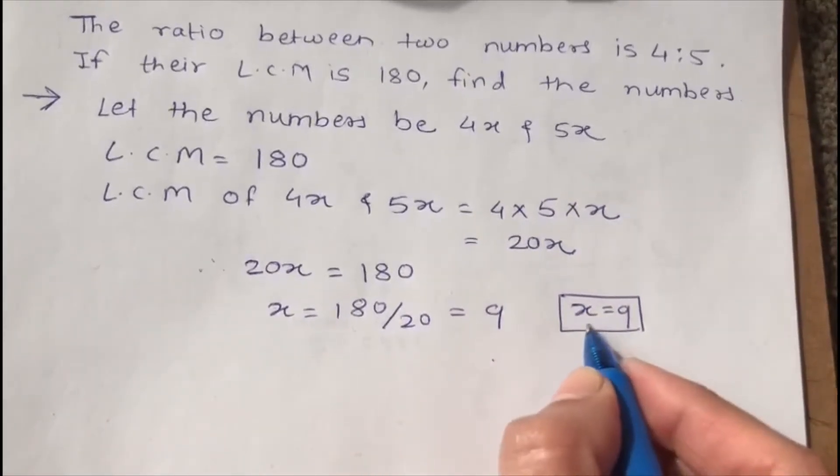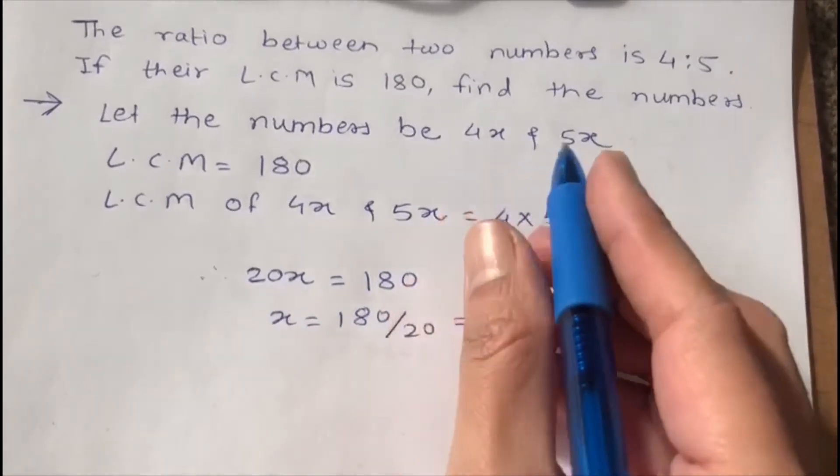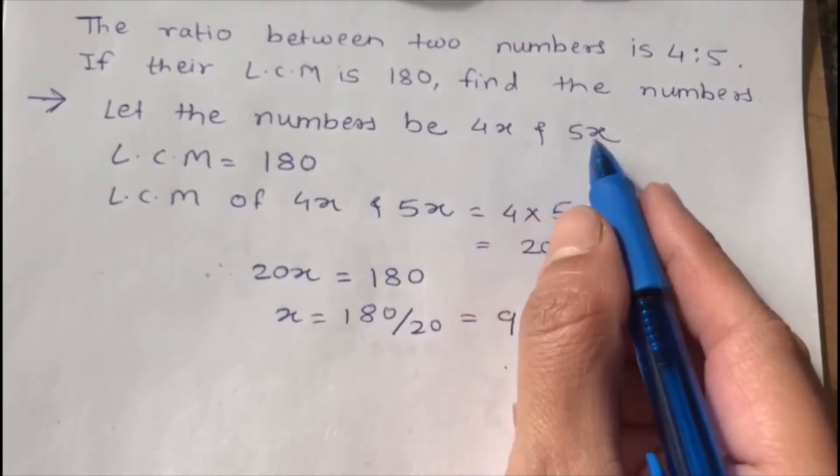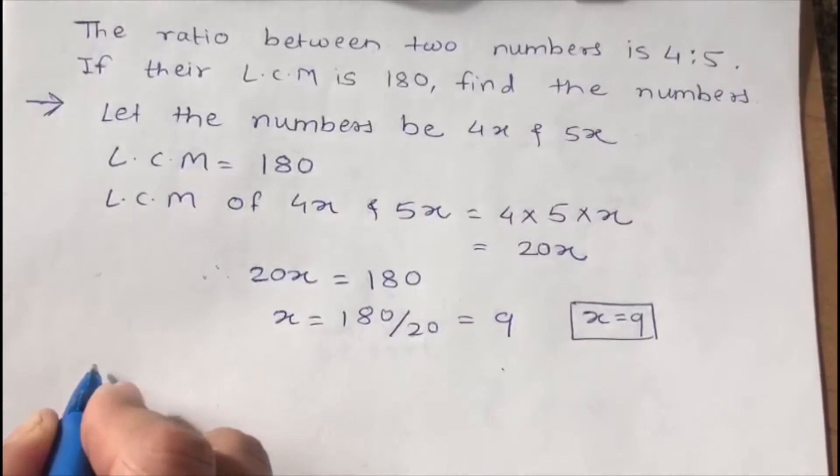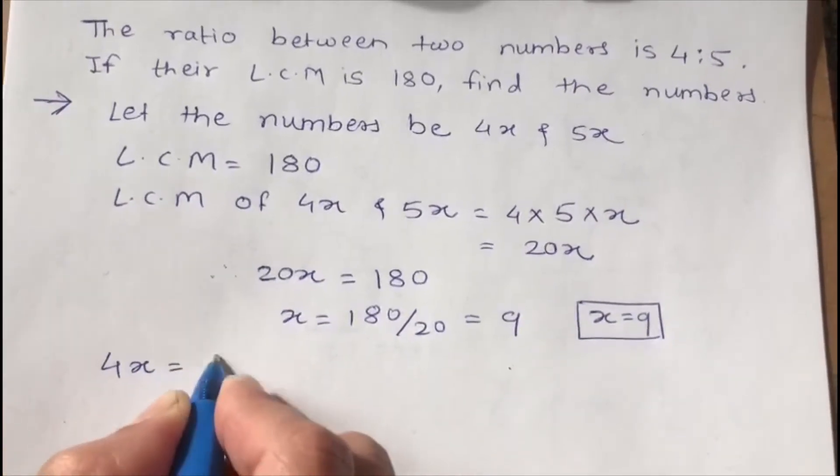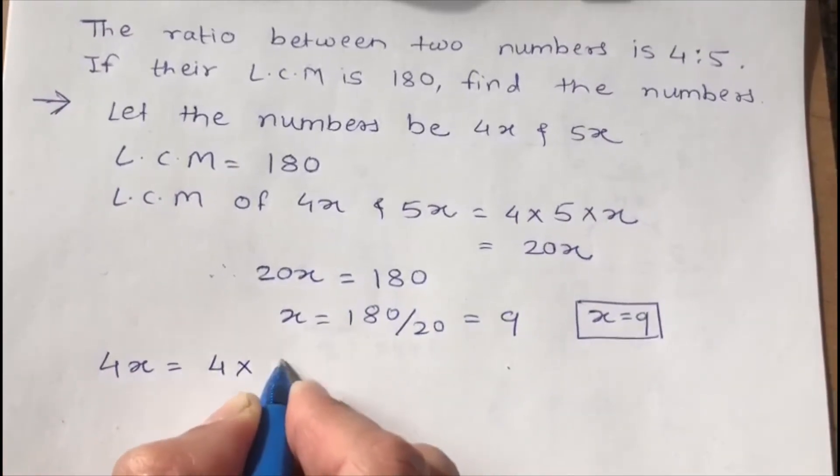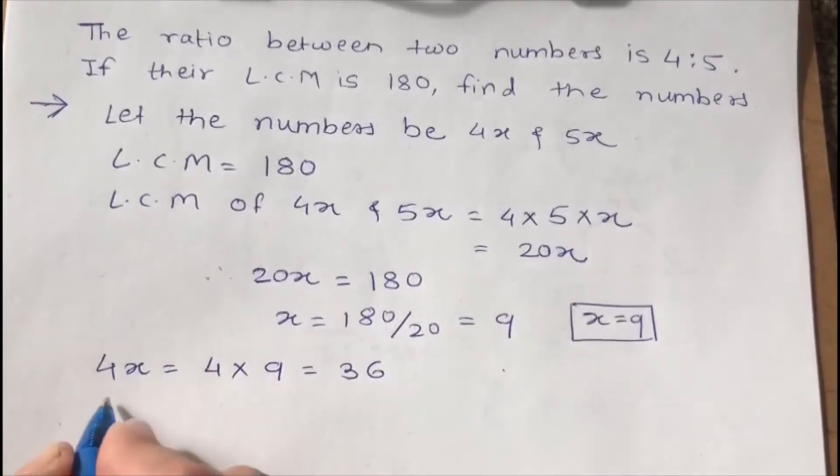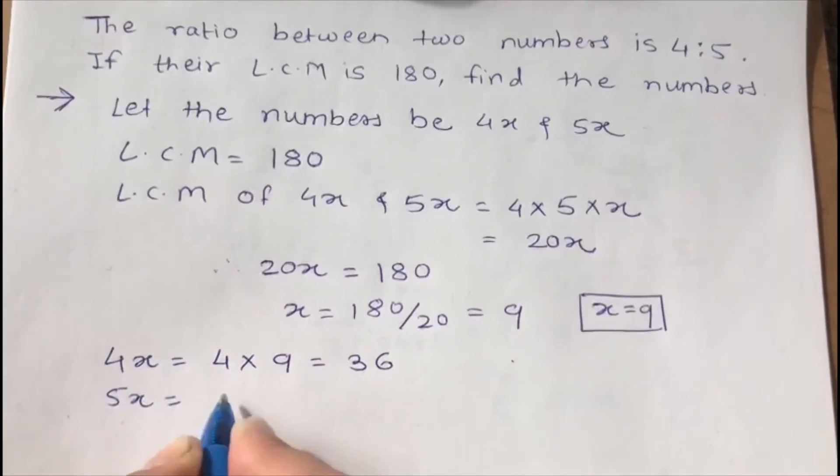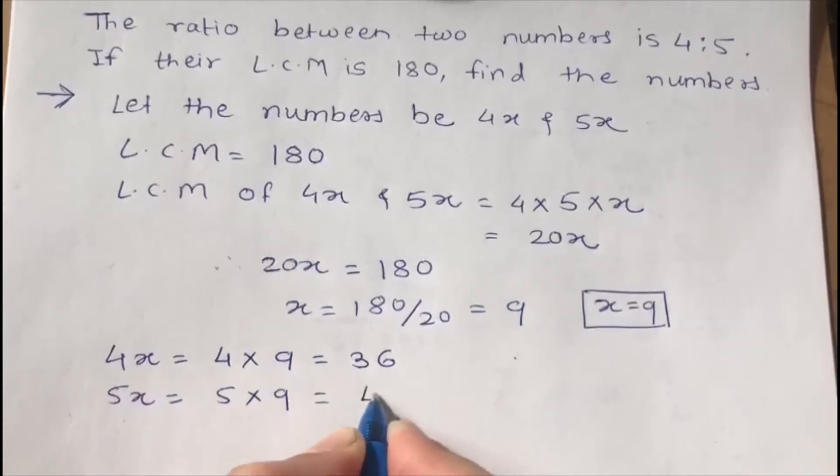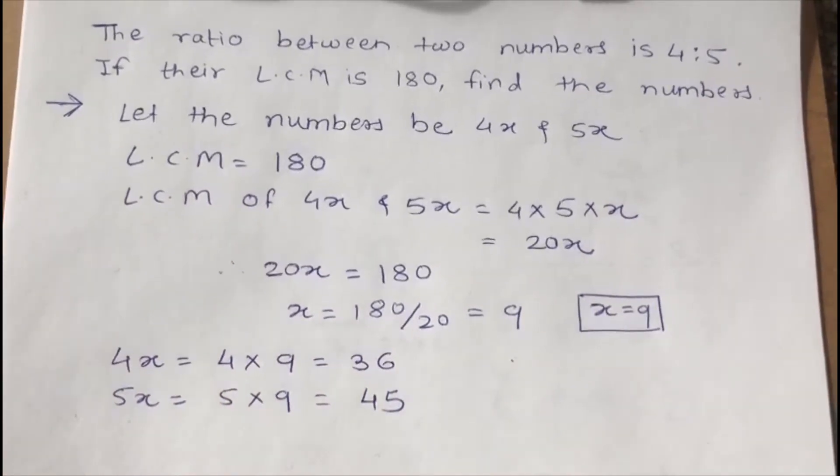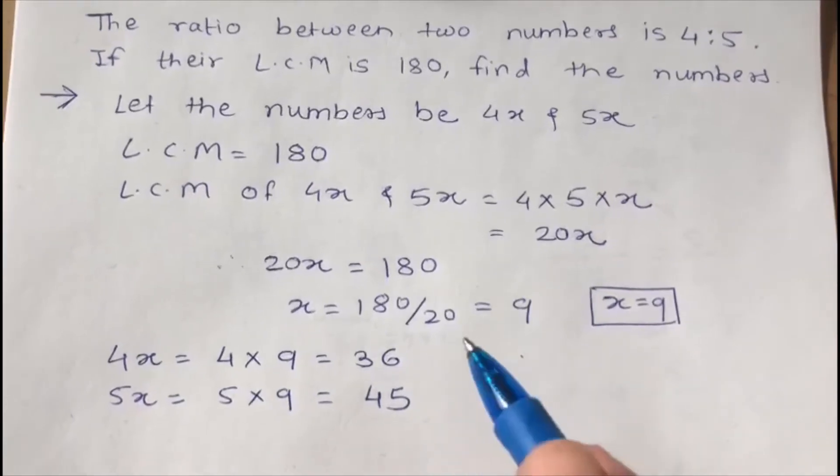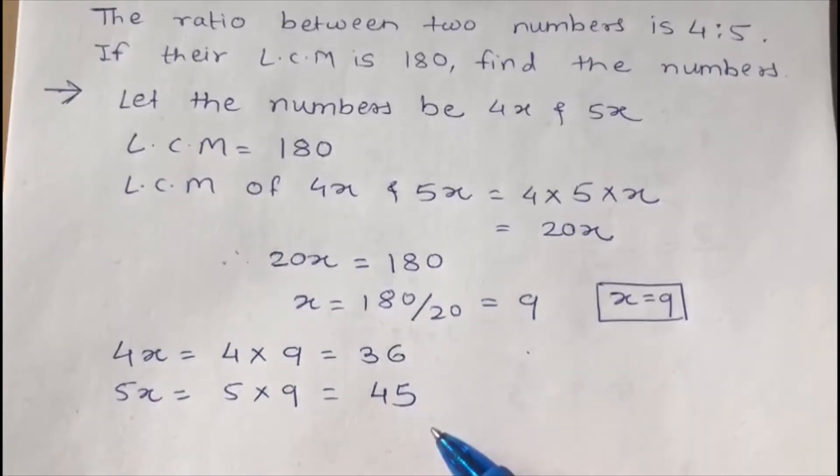When we know the value of x, then it's very easy to find the value 4x and 5x. So 4x means 4 times 9, that is 36, and 5x means 5 times 9, that means 45. So these two numbers are 36 and 45.